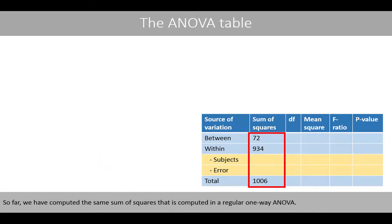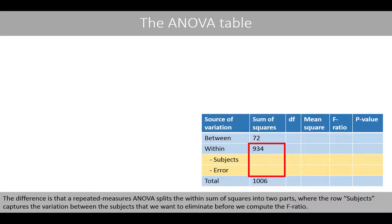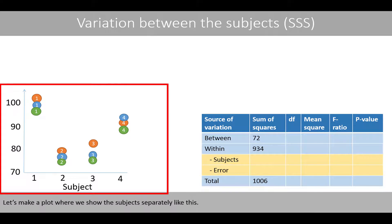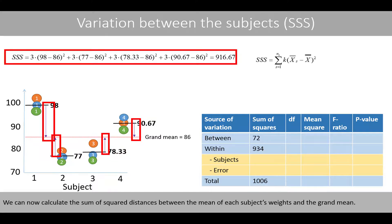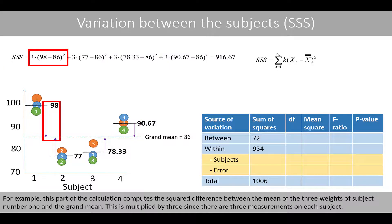So far, we have computed the same sum of squares that is computed in a regular one-way ANOVA. The difference is that a repeated measures ANOVA splits the within sum of squares into two parts, where the row subjects captures the variation between the subjects that we want to eliminate before we compute the F-ratio. Let's make a plot where we show the subjects separately. We then calculate the mean weight of each subject for the three time points. We can now calculate the sum of square distances between the mean of the subject's weights and the grand mean. For example, this part of the calculation computes the square difference between the mean of the three weights of subject number one and the grand mean, multiplied by three since there are three measurements on each subject.